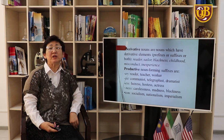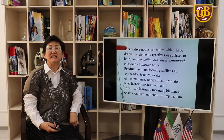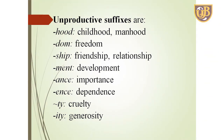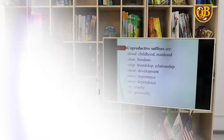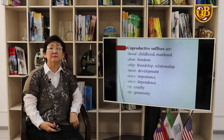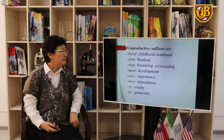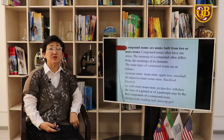The productive suffixes include -er in 'reader,' -ist in 'communist,' -ess in 'actress,' -ness in 'carelessness,' -ism in 'socialism' and 'nationalism,' and so on. We also have a number of unproductive suffixes such as -herd, -dom, -ship, -ment, -ance, -ence, -ty — as in 'dependence,' 'cruelty,' 'generosity.' You have the examples in this very page.